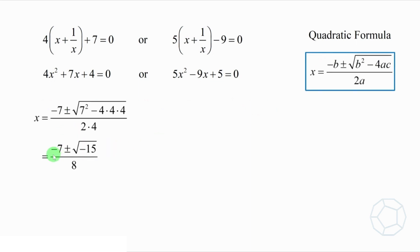For the first one, we get x equals to negative 7 plus or minus the square root of negative 15 over 8. Express it in terms of the imaginary number i, then it is equal to negative 7 plus or minus the square root of 15i over 8.